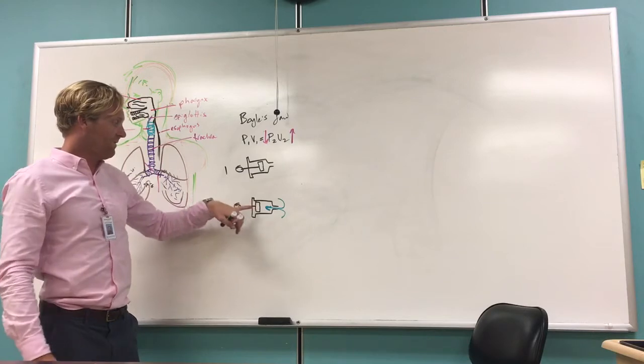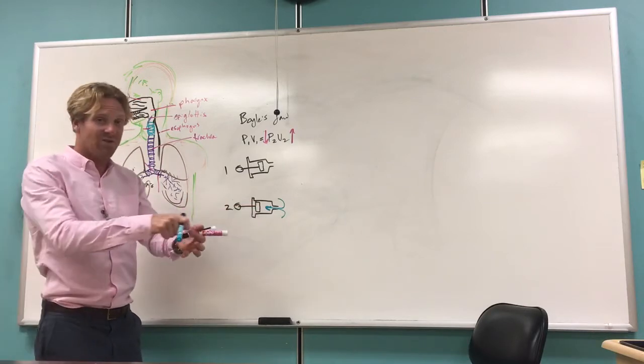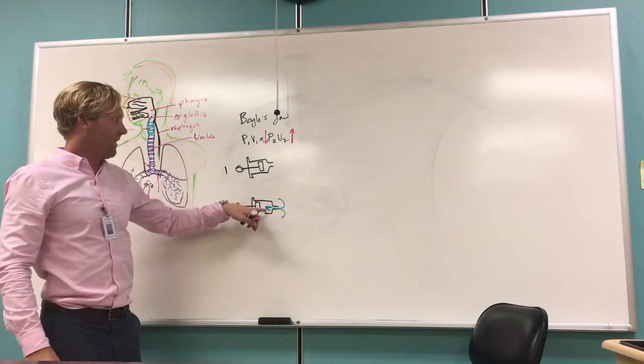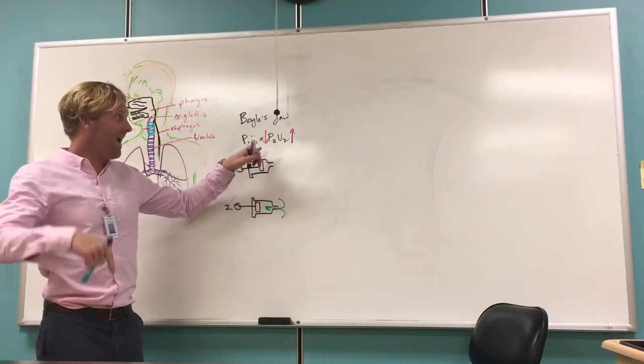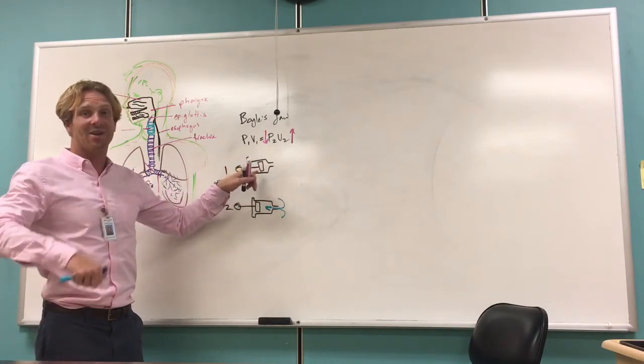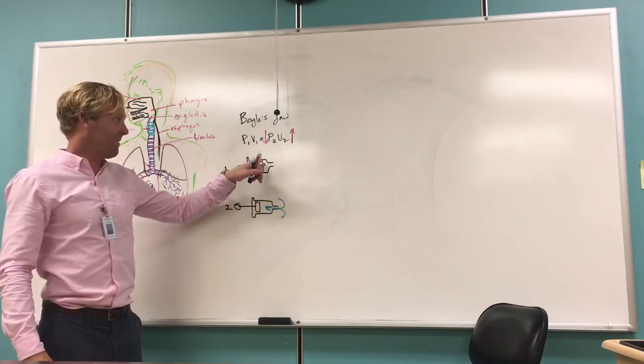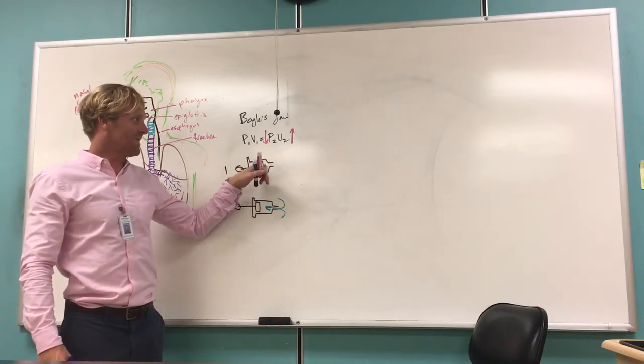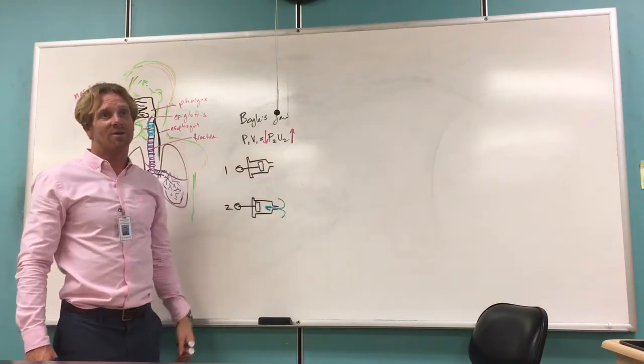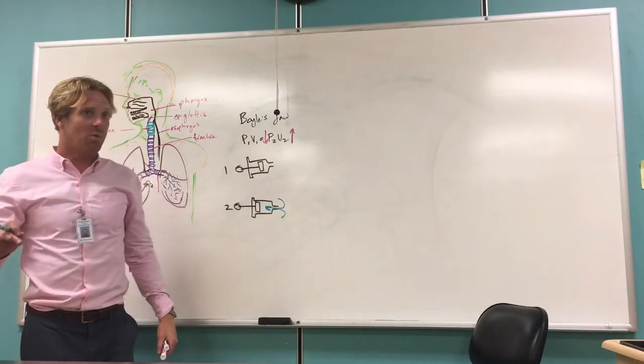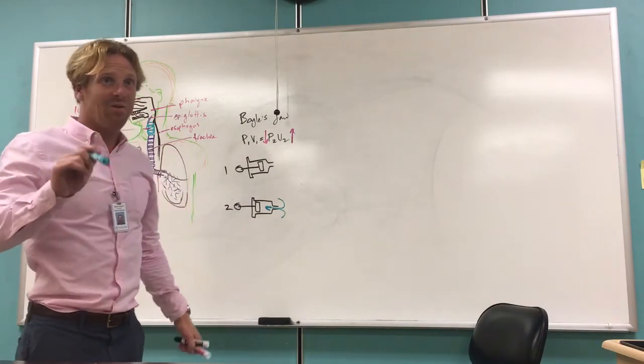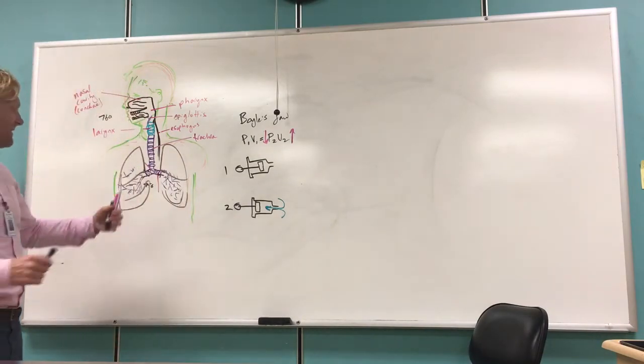Now if we do the opposite, if we take the syringe and now we push on that stopper, what we've done is we've made the volume smaller now. If volume goes down, pressure is going to have to go up. This is exactly what happens. Now we've got high pressure here that's going to force the air out of the syringe. So this is really important because this is what drives Boyle's law. And this is exactly what happens in our thoracic cavity.